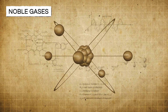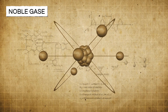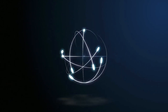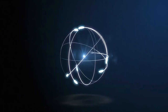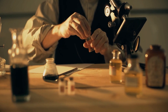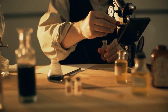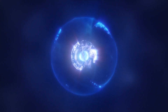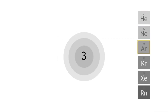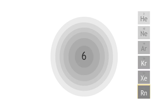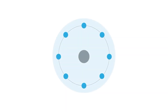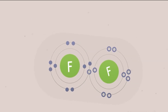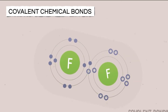The reason noble gases exhibit this stability is due to having the right number of protons to fill their electron shells completely. Chemistry at its core seeks to attain the most energetically efficient state — the state of lowest energy. Filling the outermost shell completely, as seen in noble gases, is the preferred configuration. Some atoms achieve this by sharing electrons with other atoms, forming covalent chemical bonds.